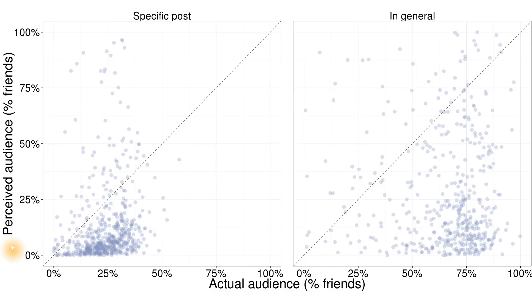The next thing that I did was to take their perceived audience size and their actual audience size, but this time I transformed the axes — as a percentage of their friend count. Some people in the study had 50 friends, some had 100, some had 2,000. So it actually makes more sense to think about your audience size as a percentage of the possible audience. All of the people in this study had shared their post with friends-only privacy, so you'd expect that it would be bounded by their friend count.